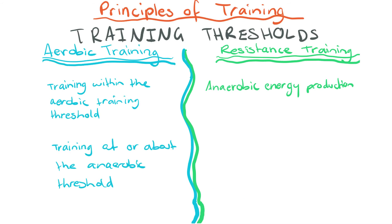Looking at how training thresholds are applied to aerobic and resistance training — for aerobic training, this means training within the aerobic training zone, so roughly 60 to 80–85% of maximum heart rate, and also training at or near the anaerobic threshold to try and increase the performance of the aerobic system.